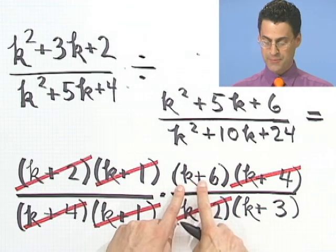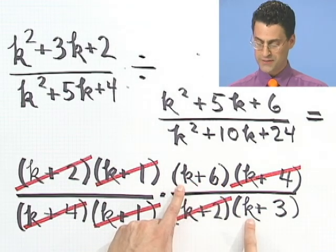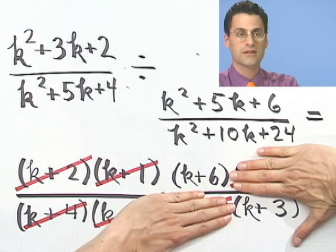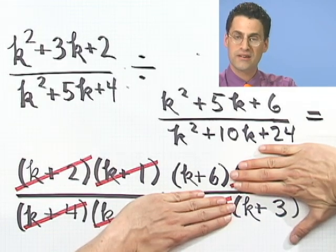And we're just left with what? k plus 6, all divided by k plus 3. And so that's the answer. You can rewrite it if you want, or you can hand in your paper just like this, including your hands. Anyway, that's the answer, and that's how you multiply and divide rational expressions.